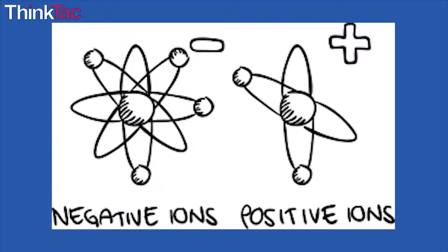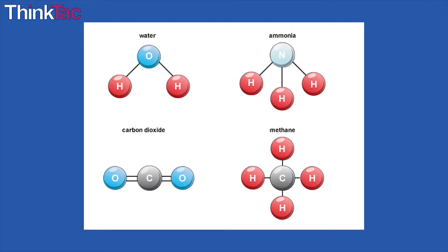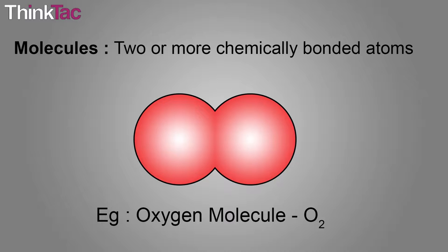Most matter is in the form of ions, molecules, or compounds. A molecule is comprised of two or more chemically bonded atoms. The atoms may be of the same type of element, or they may be different. Many elements are found in nature in their molecular form. That is, two or more atoms of the same type of element bonded together.